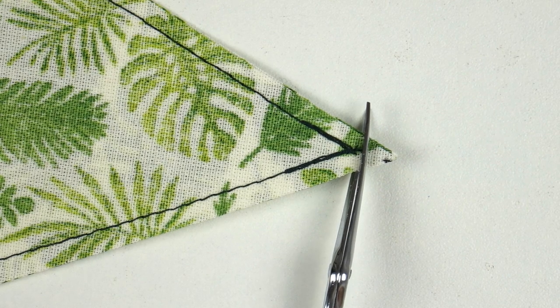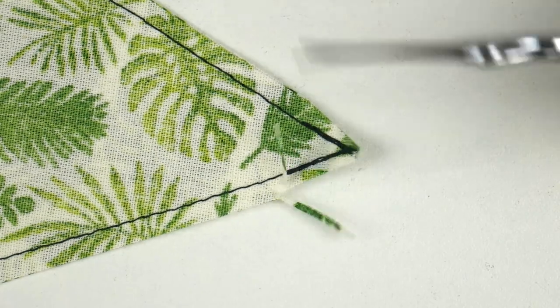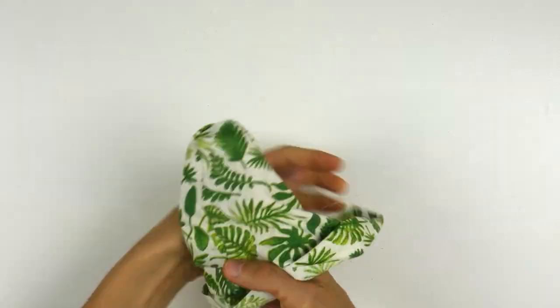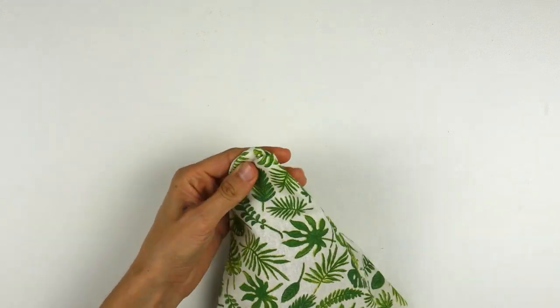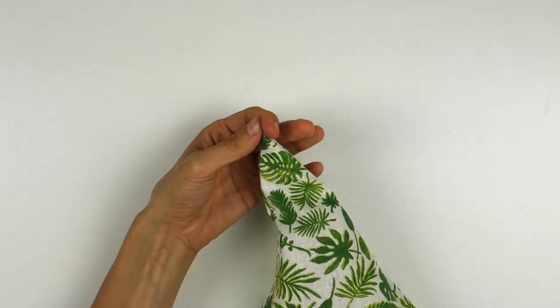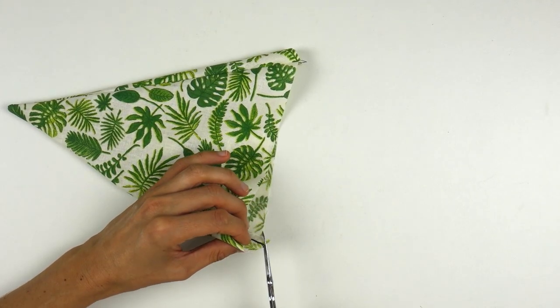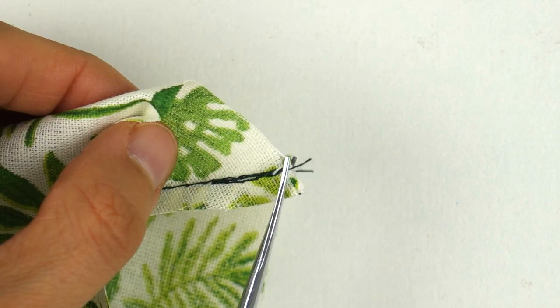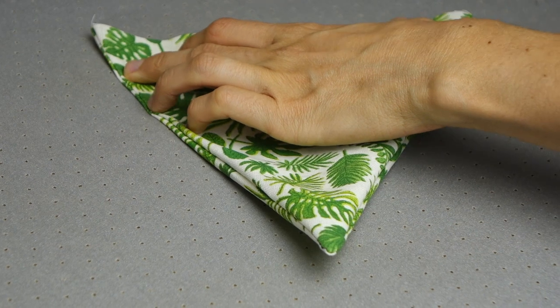Before turning our flags inside out, we need to cut out the excess fabric at the head. Then choose your tool to turn it out properly and if you're using scissors, make sure not to cut the fabric. And also to make things perfect, we'll cut some of the fabric allowance at the sides, which will allow us to insert the flags within the bias quite easily.